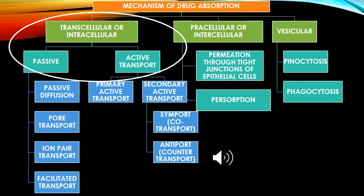Transcellular is further categorized as passive and active transport depending upon the consumption of energy. Passive transport is further categorized into passive diffusion, pore transport, ion pair transport, and facilitated transport. Whereas active transport is further divided into primary active transport and secondary active transport.